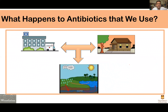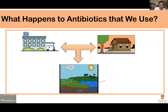What actually happens to antibiotics that we use? We have hospitals and households generating a lot of waste, and all this waste tends to get into our environment, primarily ending up in our water bodies, which contain bacteria. If antibiotics from our houses and hospitals get into water bodies, they can select for resistant organisms — so water can actually serve as an environment where selection for antibiotic-resistant bacteria occurs.